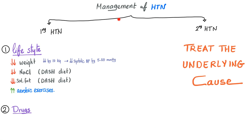So how can you manage hypertension? For secondary hypertension, you just treat the underlying cause — you remove the pheochromocytoma. Regarding primary hypertension, we have lifestyle modifications, and then when those fail, we go to medications. Lifestyle modifications: you decrease your weight, decrease sodium intake — this is part of the DASH diet — and you decrease saturated fat intake, also part of the DASH diet.